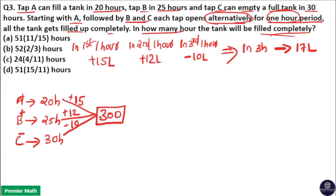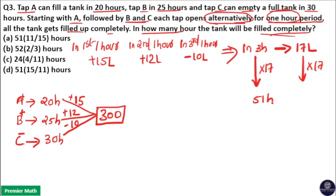We have to find out in how much time 300 liters is filled. In three hours, 17 liters are filled. Multiplying both sides by 17: 3 into 17 is 51 hours, and 17 into 17 is 289. So in 51 hours, 289 liters are filled.